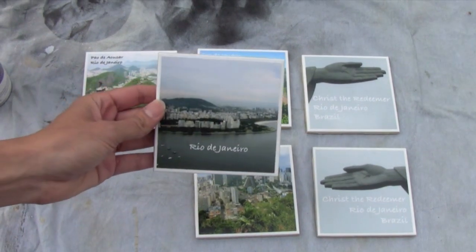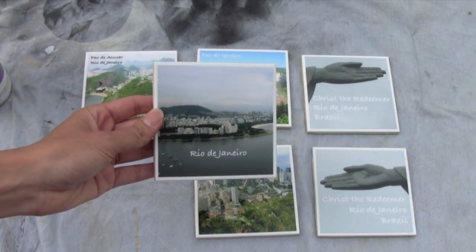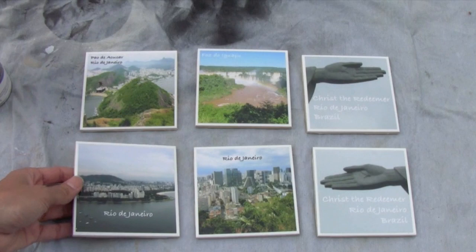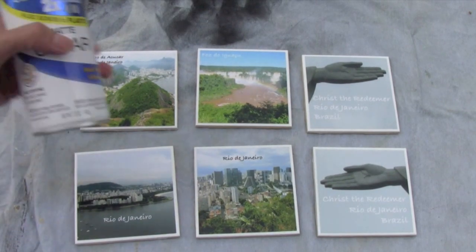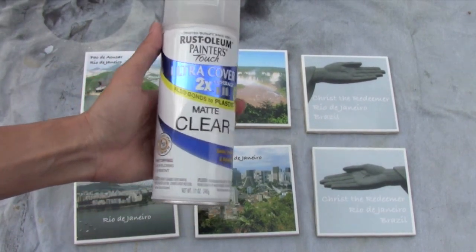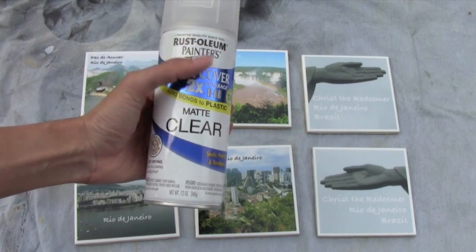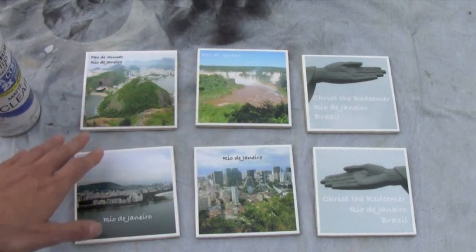We have allowed our tiles to dry overnight and as you can see the Mod Podge dried completely clear. We are outdoors now because earlier today I sprayed all of the tiles off with this matte clear spray and they are completely dry now and we are ready to move on to our next step.